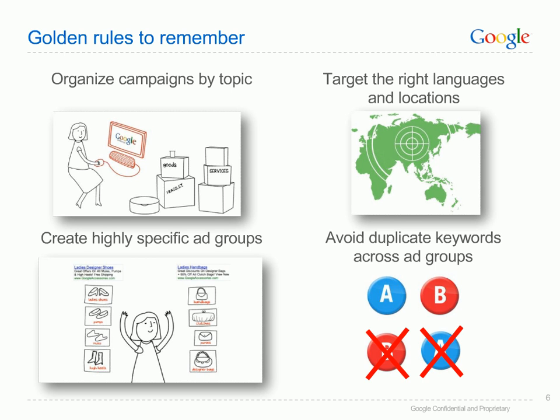Target the right languages and locations. A cost-effective campaign carefully chooses the location it targets. Determine which locations are most profitable to the client's business and invest in these areas. Create highly specific ad groups. Creating ad groups that focus on specific products drive higher CTR. Ad texts that have highly relevant copy, triggered by targeted specific keywords are more likely to drive conversions.